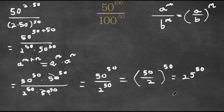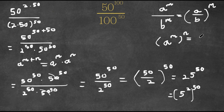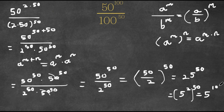Now, 25 is the same thing as 5 squared, so this is equal to 5 squared to the power of 50. And if we have something in the form a to the power of m to the power of n, this is equal to a to the power of m times n. So this is going to equal 5 to the power of 2 times 50, which is simply just 5 to the power of 100. So this is our answer.